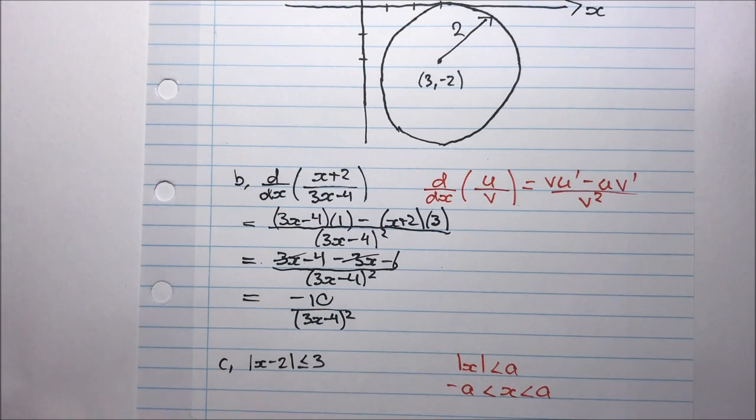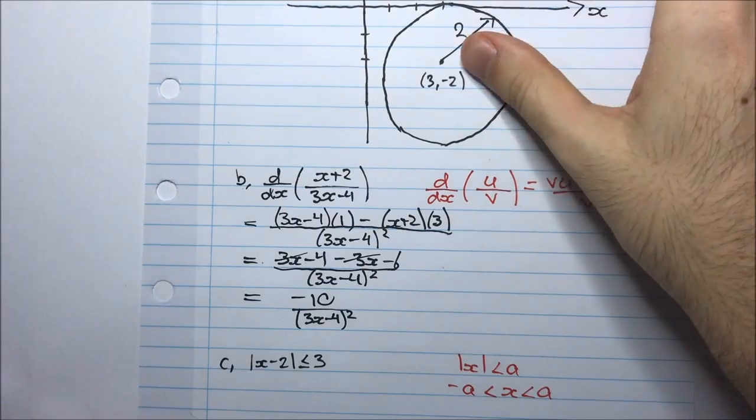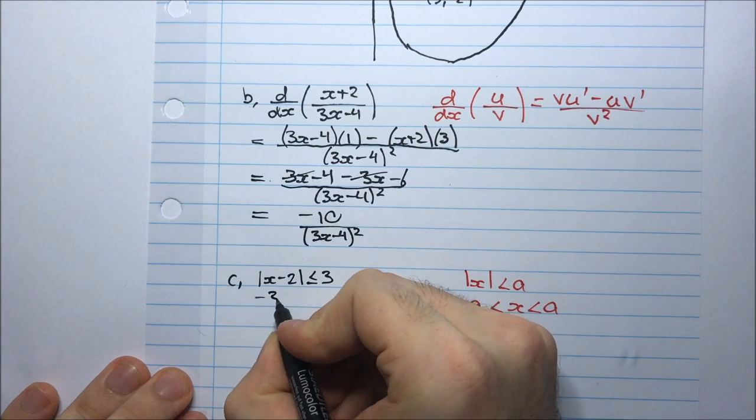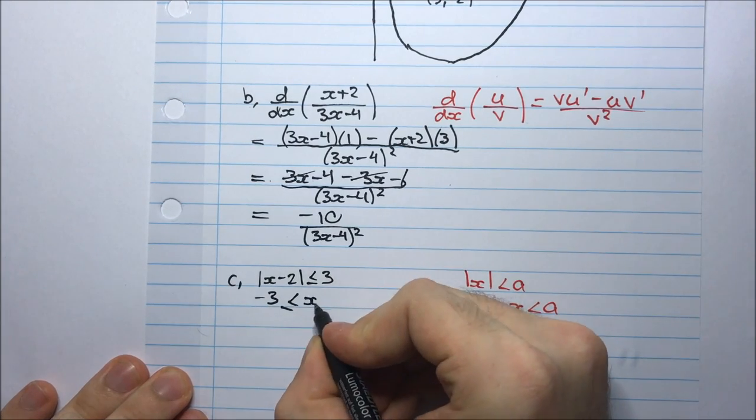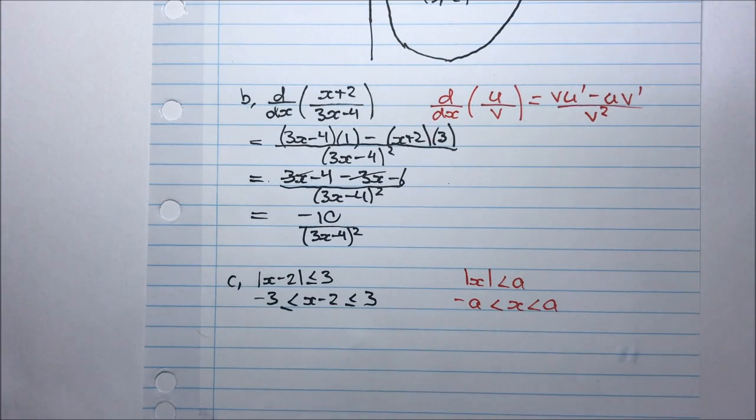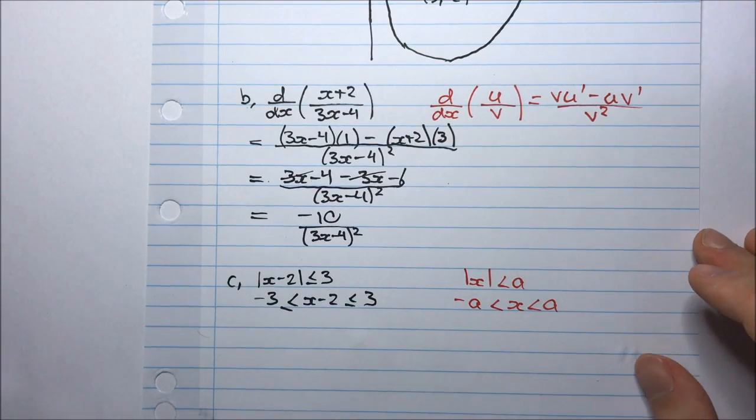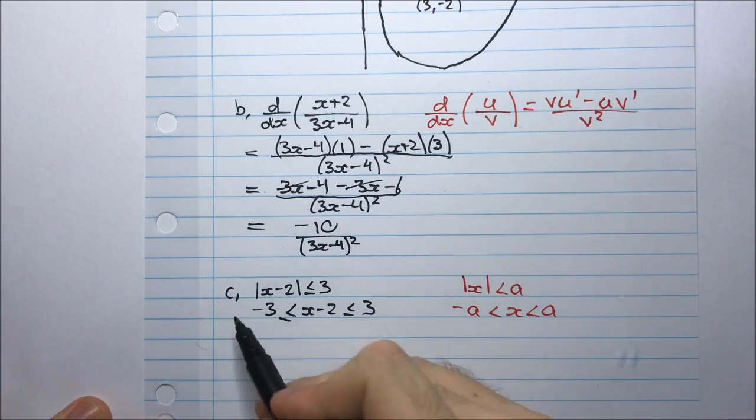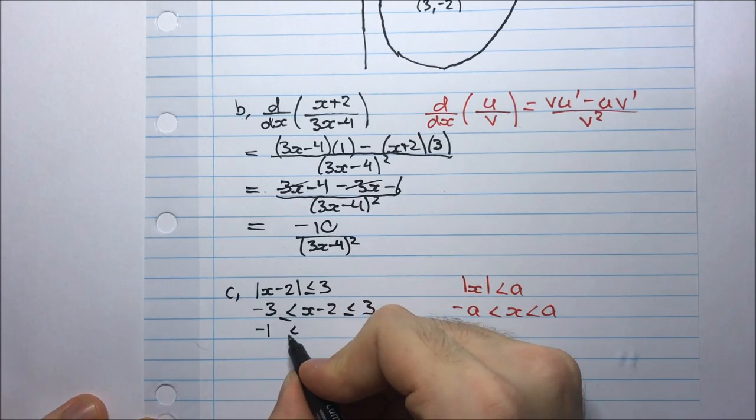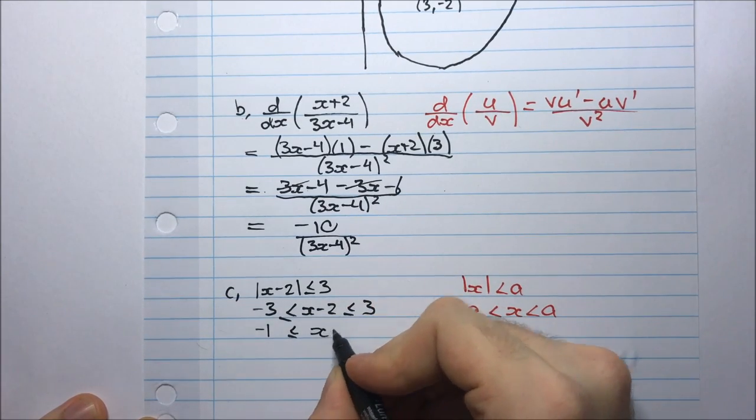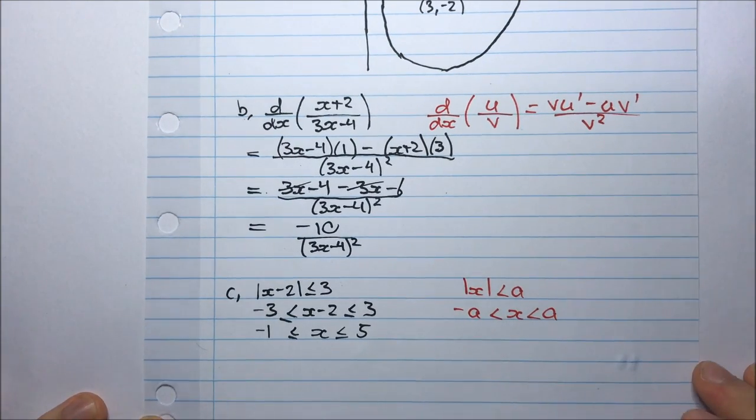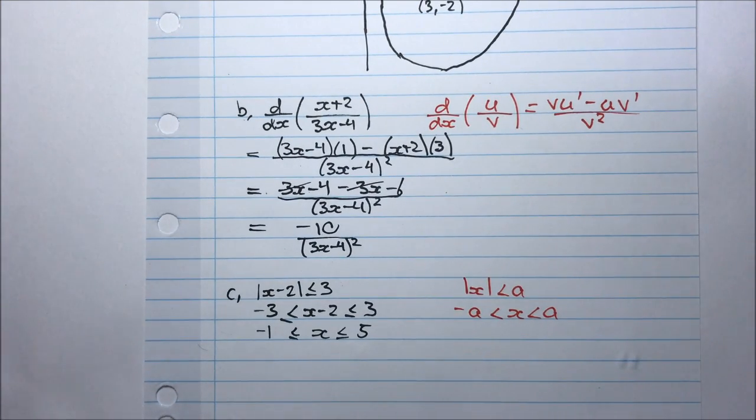So I'm going to use this here and I'm going to have -3 ≤ x - 2 ≤ 3. And since I want x by itself, I'm solving for x. So all I need to do is add 2 to every part here. So adding 2 to -3 gives me -1. Adding it to x - 2 gives me just x. And adding it to 3 gives me 5. And that's part C.